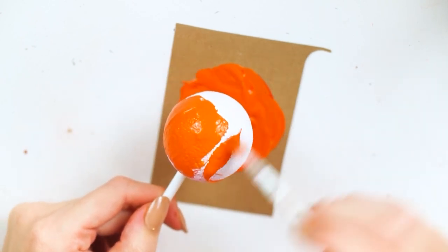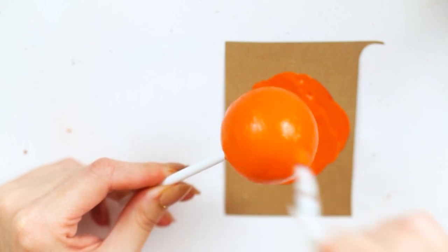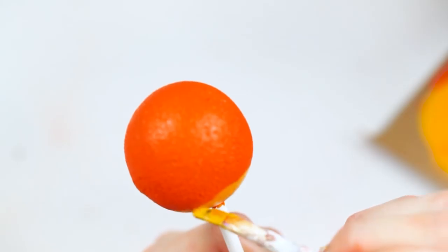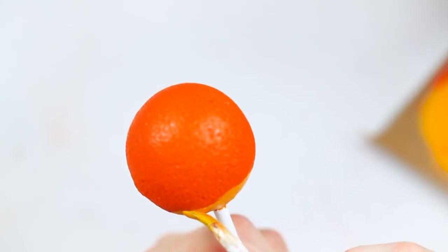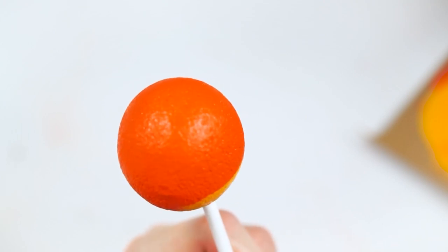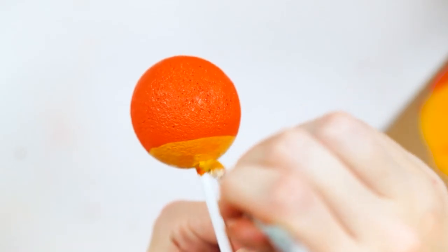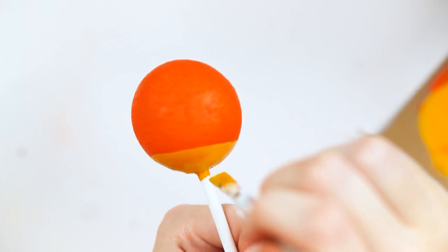For the second cake pop I painted the whole entire thing in an orange. I did the two layers in white before as well on all of them. I painted it in orange and then I painted the bottom of it in a yellow.